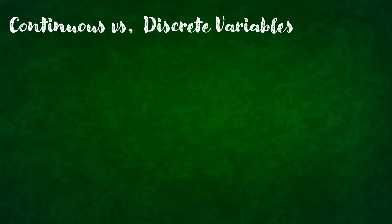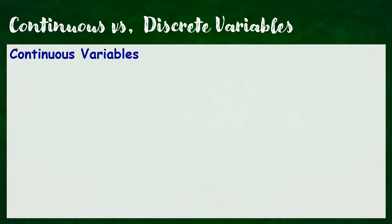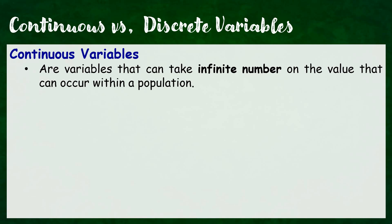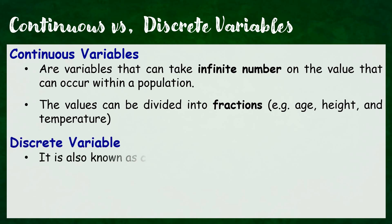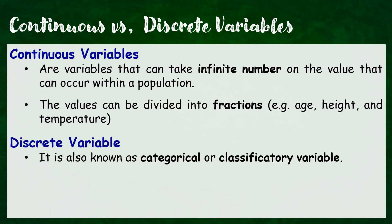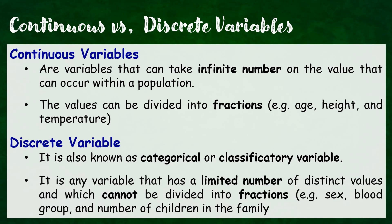A variable can be classified as continuous or discrete variable. A continuous variable is any variable that can take an infinite number of values that can occur within a population. The values can be divided into fractions — for example, age, height, and temperature. While a discrete variable is also known as the categorical or classificatory variable; it is any variable that has a limited number of distinct values which cannot be divided into fractions — for example, sex, blood group, and number of children in the family.